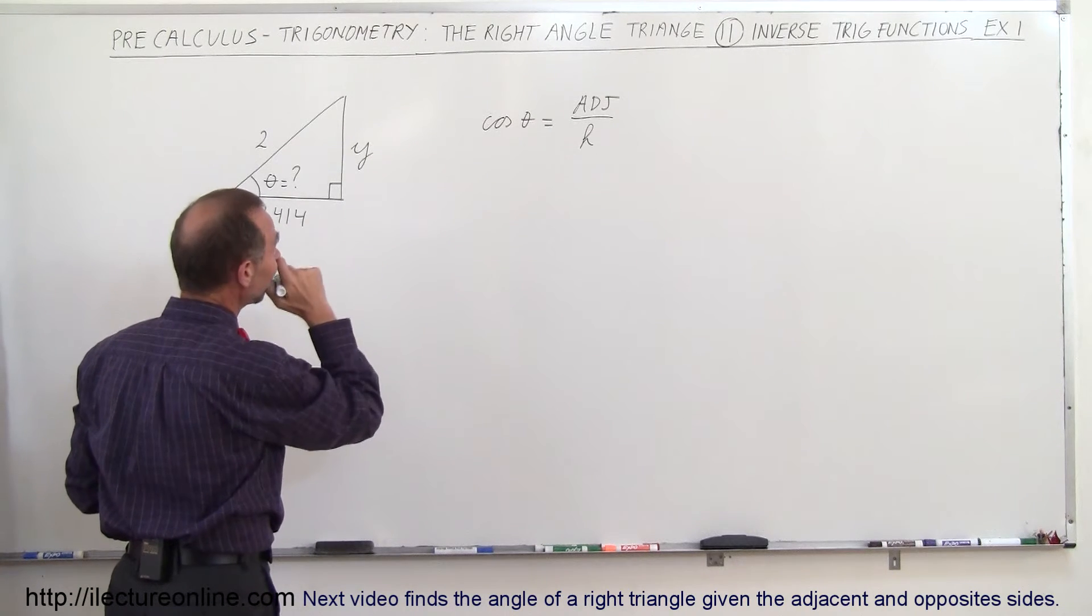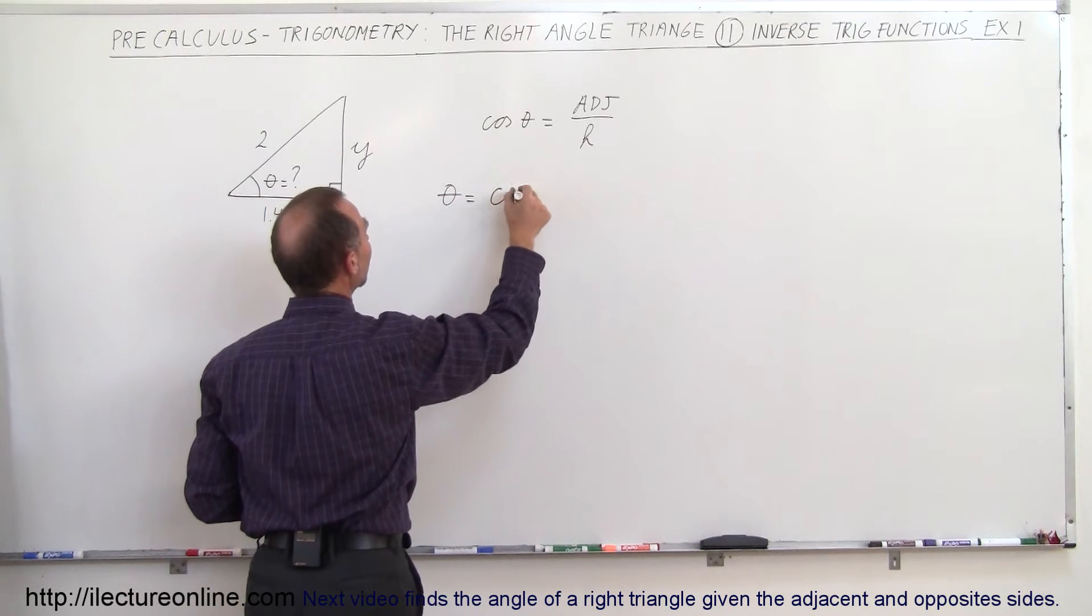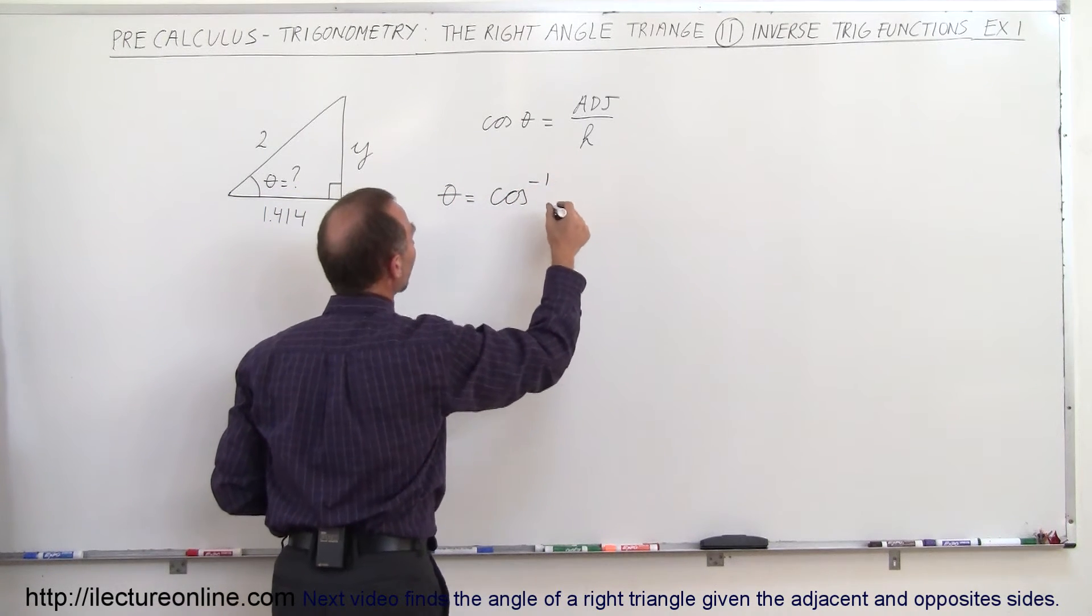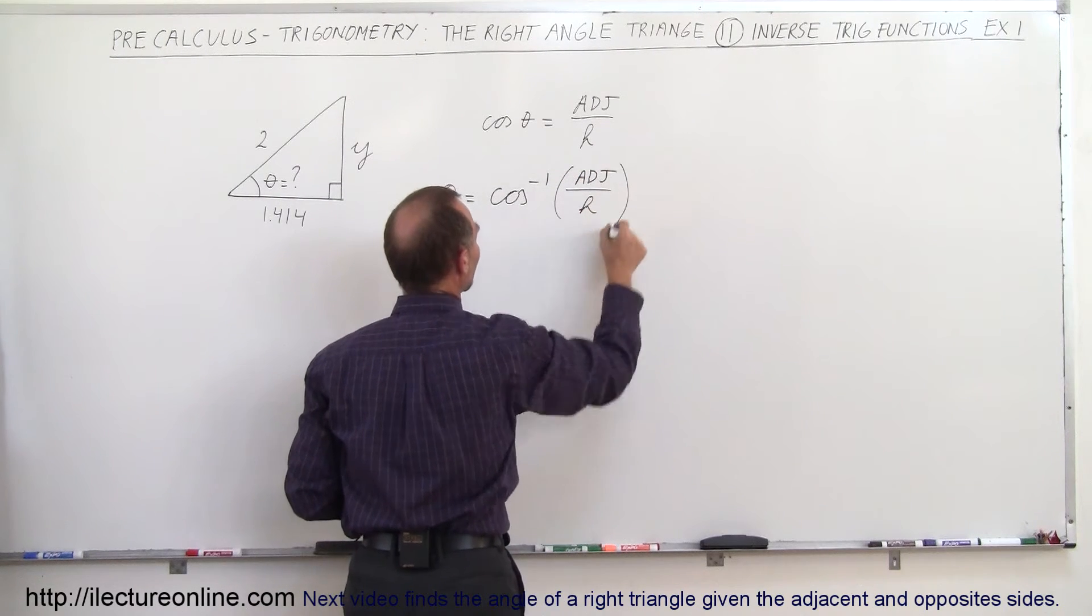So since we're now looking for the angle, we can then say that theta, the angle, can be found by taking the arc or the inverse cosine of the ratio of the adjacent side divided by the hypotenuse.